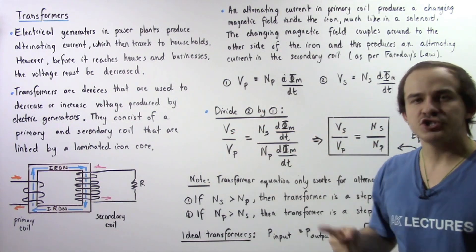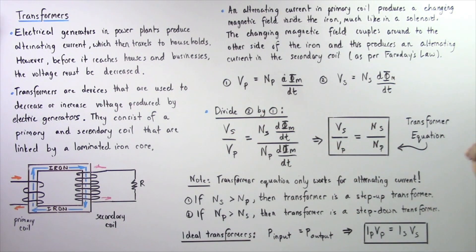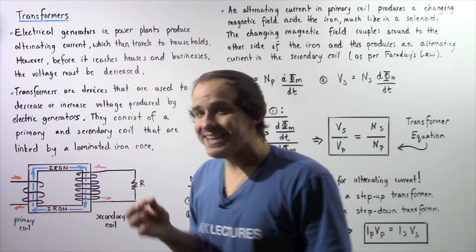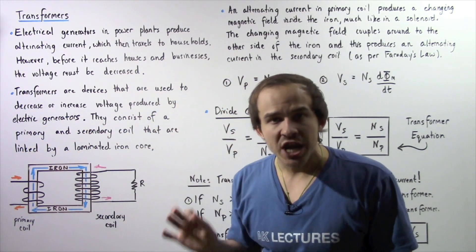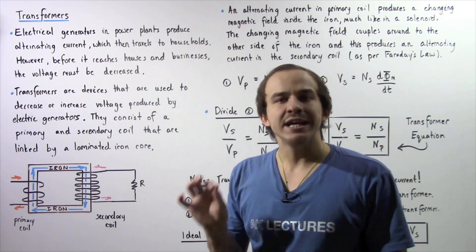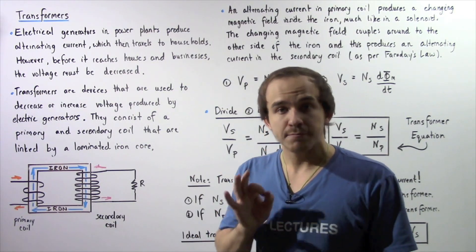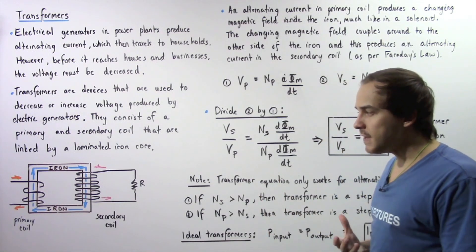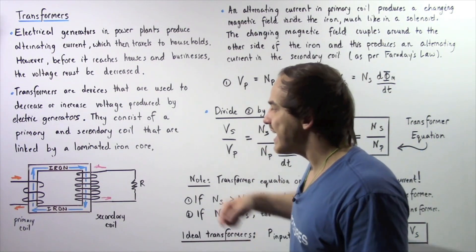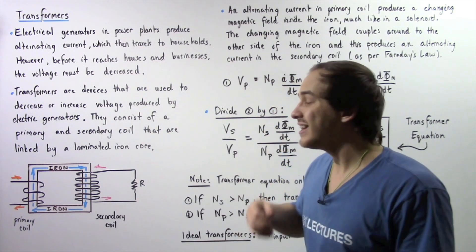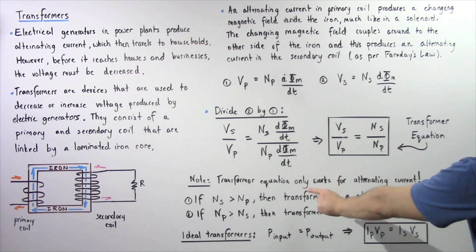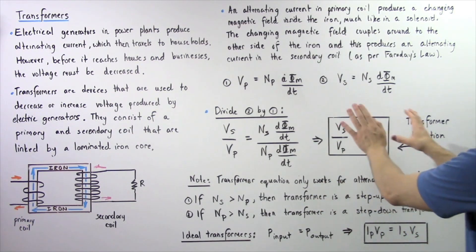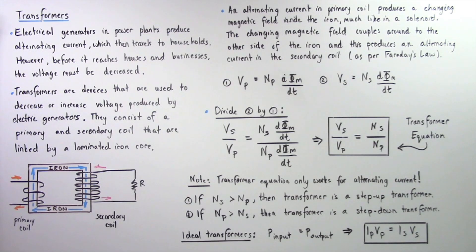The transformer equation only works as long as we have an alternating electric current. If our electric current was a DC current, then the magnetic field produced inside the iron would not be a changing magnetic field but a constant one. Because we have a constant magnetic field, there would be no changing magnetic flux, and no electric current would be induced in the secondary coil. So the electric current must be alternating for the transformer equation to work.